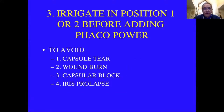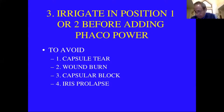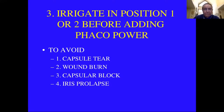Question three: Why should you irrigate in position one or two before adding phaco power? Is it to avoid a capsule tear, a wound burn, a capsular block, or iris prolapse? You irrigate before adding phaco power — it does help some to avoid a capsule tear by keeping the chamber deep, but the big reason is to make sure fluid is moving through the eye to avoid a wound burn.